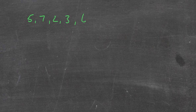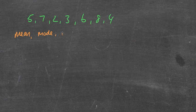Now, let's say we've got 5, 7, 2, 3, 6, 8, 4. I'm going to ask you to find first of all the mean, then the mode, then the median, and then the range. If you want to pause it, have a quick crack at it and see if you can come up with the right answers.